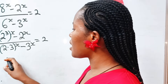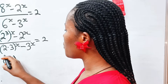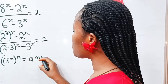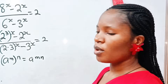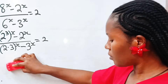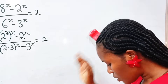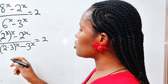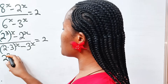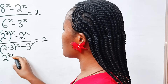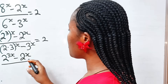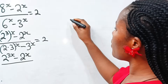Remember that a to the power of m, raised to the power of n, is equal to a to the power of m multiplied by n. So we can write this as 2 to the power of 3 times x, which is 3x, minus 2 to the power of x divided by...